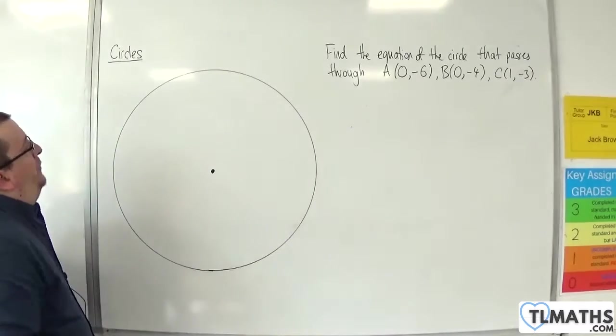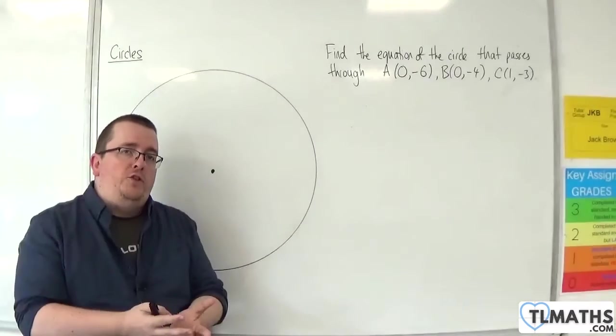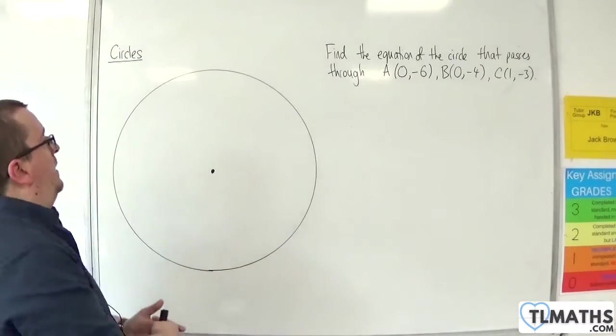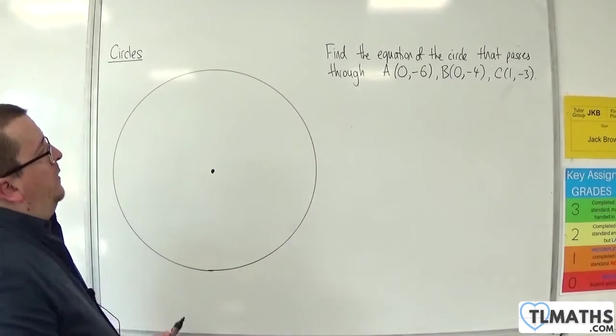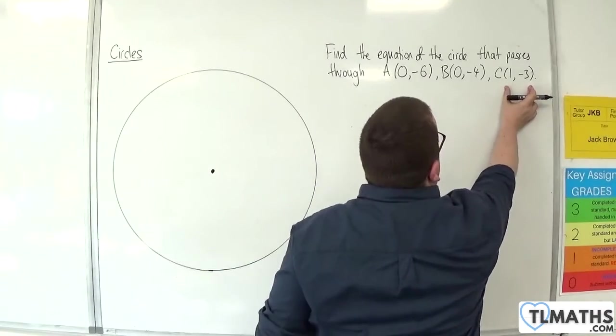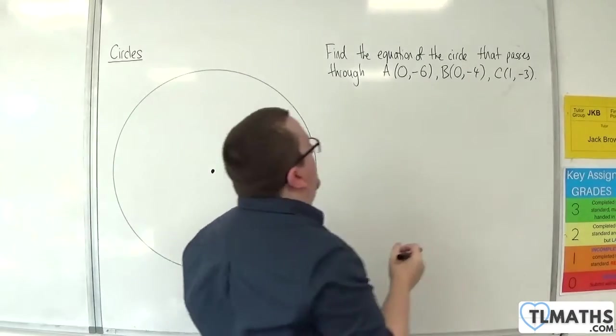So here is my circle. I'm just going to draw a picture so that I can visualize what's going on. If it's tricky, we draw a pic. So (0, -6) and (0, -4) and this one, (1, -3), is over to the right and a little bit higher than the other two.